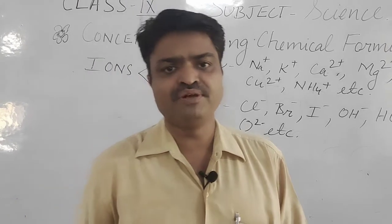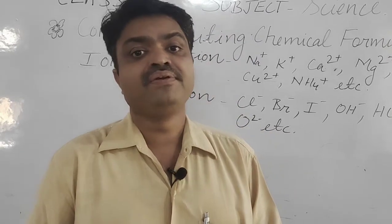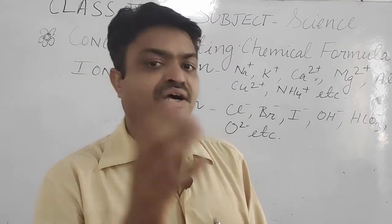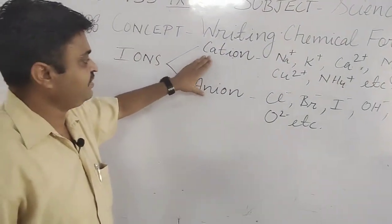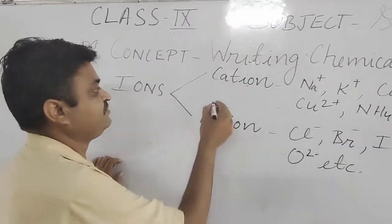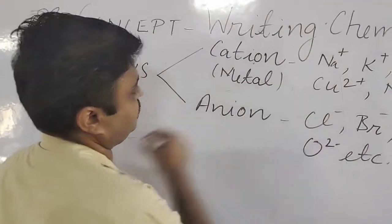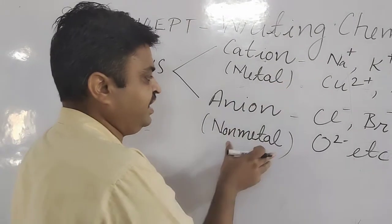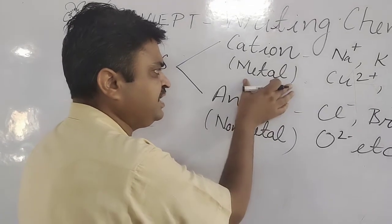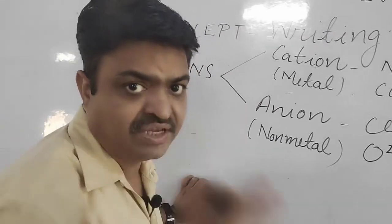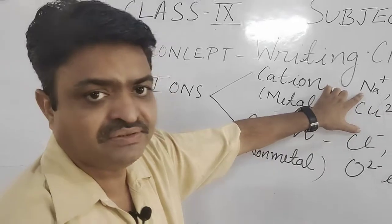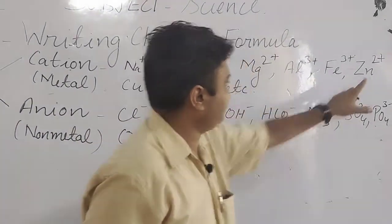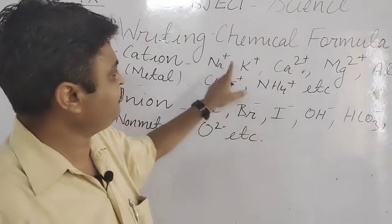For writing the chemical formula, first you should learn the symbols of chemicals. After that, you should also learn the charges on particular chemical substances or on the ions. There are two types of ions: cation and anion. Cations are generally metals and are electropositive in nature. Examples include sodium ion (Na⁺), potassium ion, calcium ion, magnesium ion, aluminium ion, iron ion, zinc ion, copper ion, and ammonium ion. They all have charges on them.